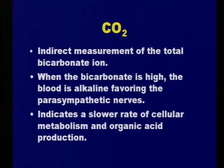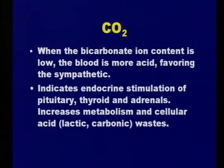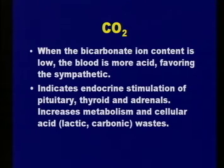When CO2 is high, the blood is a little more alkaline and it favors the parasympathetic nervous system. It also indicates a slightly slower rate of cellular metabolism—cells aren't sending out toxic waste or taking in nutrients as efficiently, so cellular acid waste goes up inside the cell. When bicarbonate content is low, the blood gets a little more acid—just a hundredth of a point—and that's associated with the sympathetic. Sympathetics tend to run more acid, which can involve endocrine stimulation of the pituitary, thyroid, and adrenals, and increases metabolism and cellular waste.